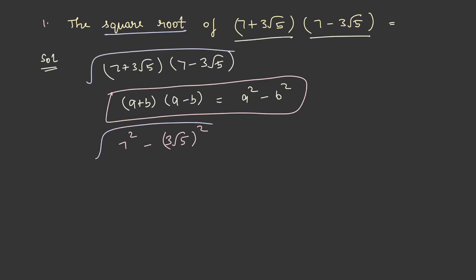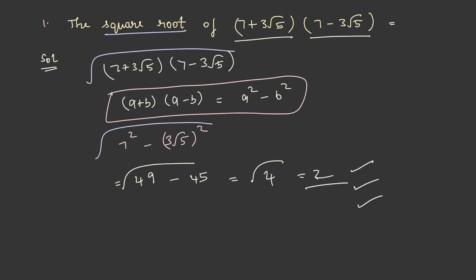7 squared is 49 and (3 root 5) squared is 45, so we get square root of 4, which is equal to 2. With this we have completed the concepts, shortcut tricks, and basic questions. In the next lecture, let us look at the simplification of square roots.